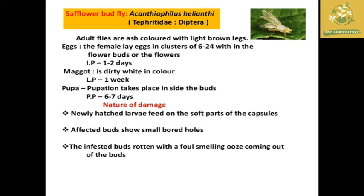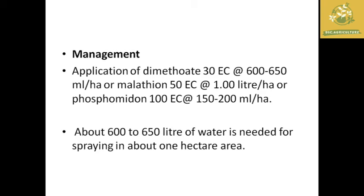The newly hatched larvae feed on the soft parts of the capsule, which is the characteristic damage. The affected capsules show small boreholes, and infested buds emit a rotten smell. The ooze coming out of the buds is the characteristic symptom of safflower budfly. Management includes chemical sprays like dimethoate 30 EC, malathion 50 EC, or phosphamidon 100 EC at the required dosage, with about 600 to 650 liters of water needed per hectare.